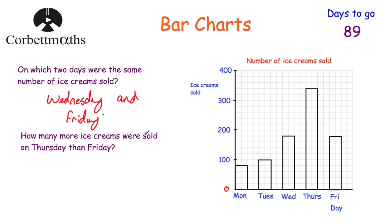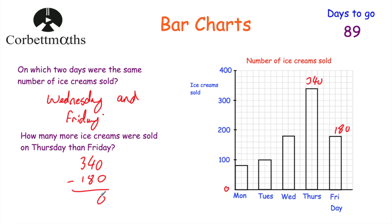The next question asks: how many more ice creams were sold on Thursday than Friday? Friday had 180 ice creams — going up in 20s: 120, 140, 160, 180. For Thursday we've got 300, then 320, 340 — so 340 ice creams were sold on Thursday. We do 340 subtract 180: 0 take 0 is 0, borrow to get 14 take 8 is 6, 2 take 1 is 1. So 160 more ice creams were sold on Thursday than Friday.